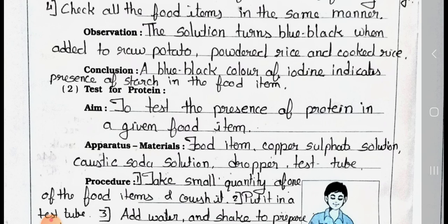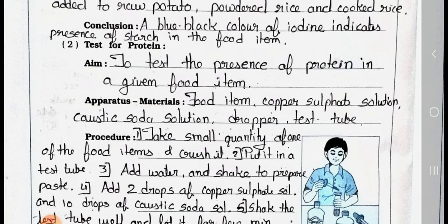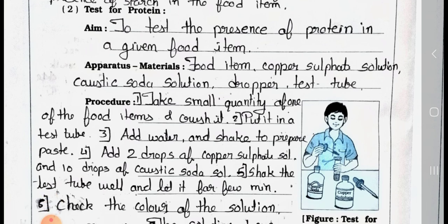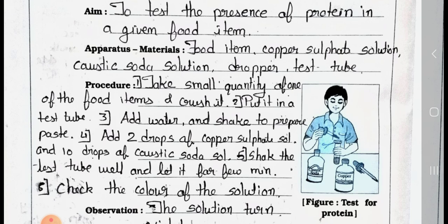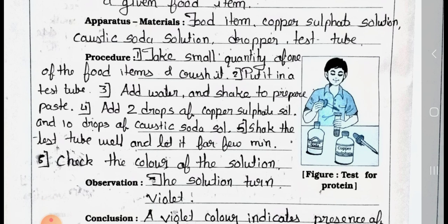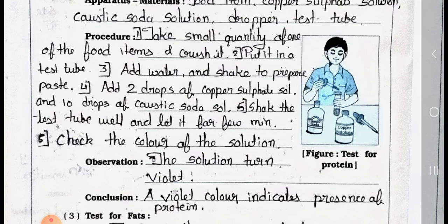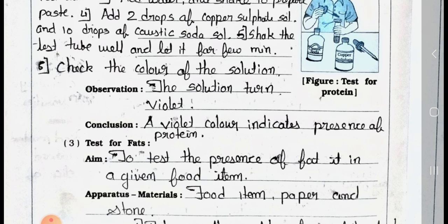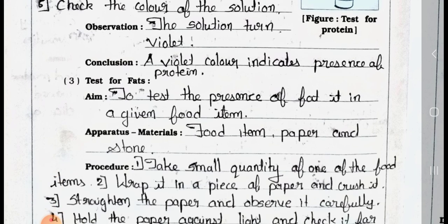Test for protein — aim: to test the presence of protein in a given food item. Apparatus and materials: food items, 1–3% copper sulphate solution, caustic soda solution, dropper, and test tube. Procedure: take a small quantity of the food item, put it in a test tube, add water and shake to prepare a paste, add 2 drops of copper sulphate solution and 10 drops of caustic soda solution, shake the test tube well and let it stand for a few minutes, then check the color of the solution. Observation: the solution turns violet. Conclusion: a violet color indicates the presence of protein.